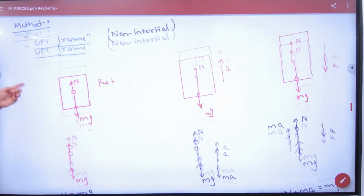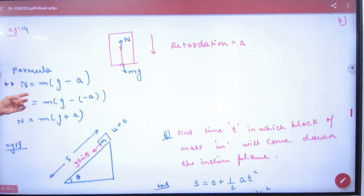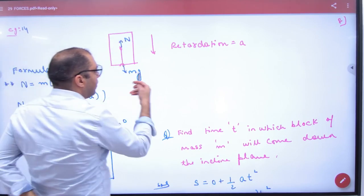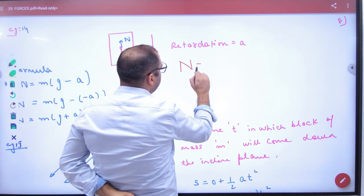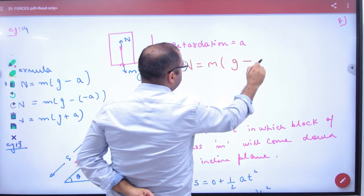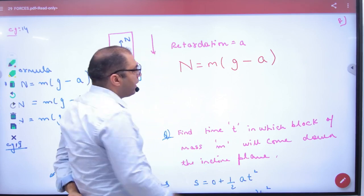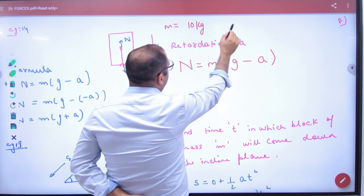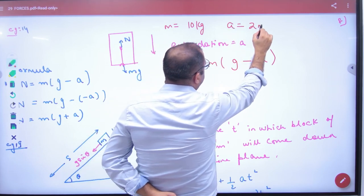Next, in this case, some numericals will come. What will happen? They will say that lift is accelerating down. You will know that normal reaction formula will be M(g - a). They will say lift has 10 kg mass man and acceleration is 2 meters per second square.